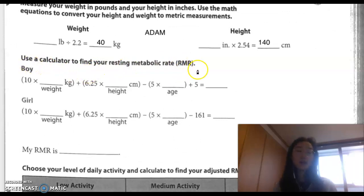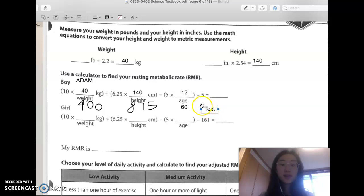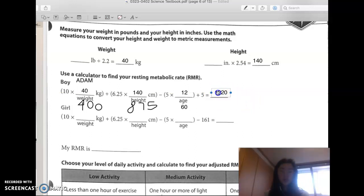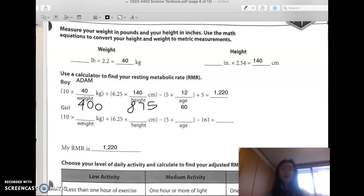Once you wrote down the kilogram and centimeters, let's do the next one. Use a calculator to find your RMR. So notice that there are two different formulas for boys and girls. So if you're a boy, of course use this formula. If you're a girl, use this formula. Since our friend Adam is a boy, I'm going to be using the boy formula. So we're going to write down the height and the weight here, and you're going to write your age here. So Adam is 12 years old. So we're going to be doing this in the calculator. Pause this video and do the math for your personal RMR. Our friend Adam, his RMR is 1220.